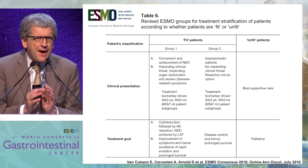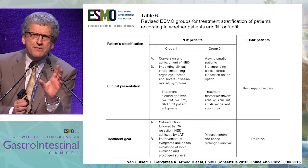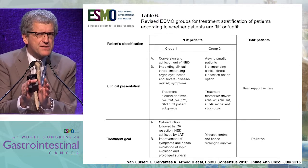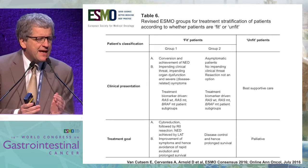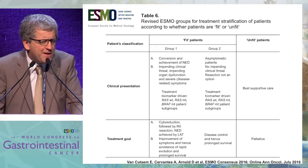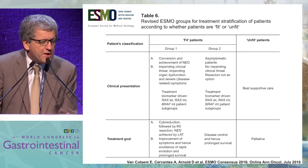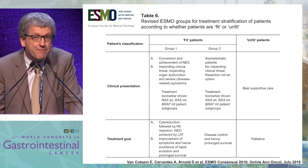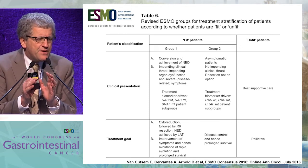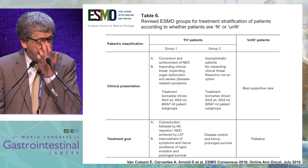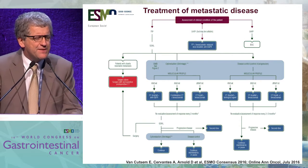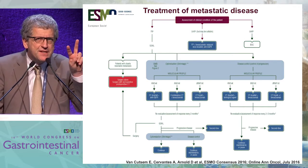Moving away from previous grouping systems in prior ESMO guidelines, patients are now classified into two groups: unfit patients directed toward best supportive care and palliative treatment, and fit patients divided into two subgroups based on treatment goal. In the first subgroup, the goal may be cytoreduction or improvement of symptoms and avoidance of rapid evolution. In the second, the goal is disease control and prolonged survival, where clinical presentation is a key determining factor.